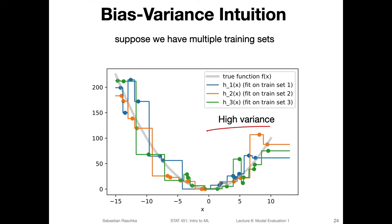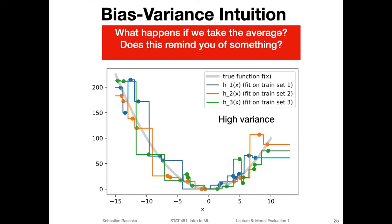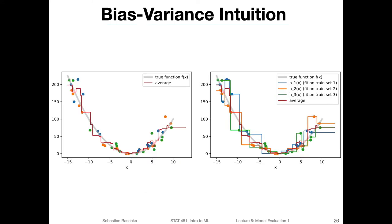So unpruned decision trees have high variance, whereas linear regression models usually have high bias on non-linear datasets. Now, if we take the average — the model average — that would be an ensemble method where we just average the model predictions.